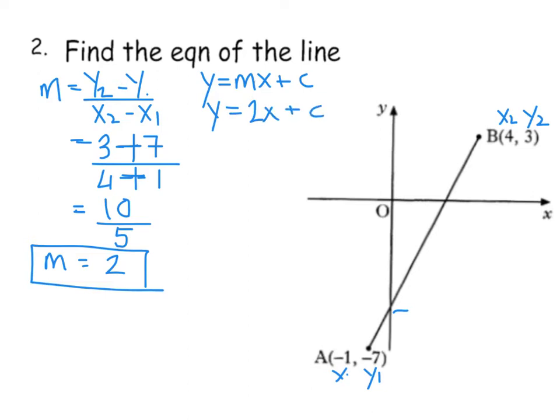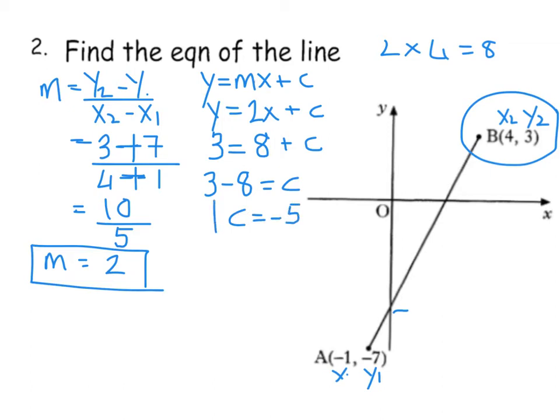Okay, from there we choose a coordinate. I try to avoid the ones with negatives. So I'm going to use this coordinate over here and replace that for my x and my y. So the y number is three. The x number is four. So remember two times four is eight. So the number eight goes in here, eight plus c. Eight is positive, which will become negative when it goes over here. So three take eight is c. Three take eight is minus five. So c is minus five.